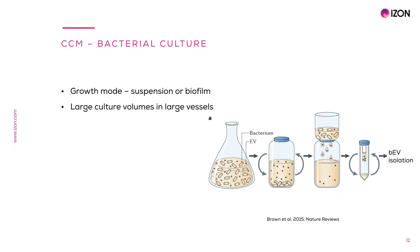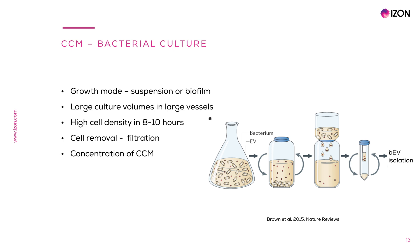Culture of bacteria for EV production has historically been done with cells growing in suspension in very large vessels. However, biofilm is the most common growth mode in bacteria and is now starting to get attention in EV research. Suspension bacterial cultures can reach very high densities in 8 to 10 hours, which is an advantage for fast and efficient EV production. For successful removal of bacterial cells, which may be as small as 0.5 microns, centrifugation and filtration is preferred. Attention must be paid to detailed recording of culture conditions, as quick bacterial growth enables a rapid response to environmental changes through the modulation of released EVs.